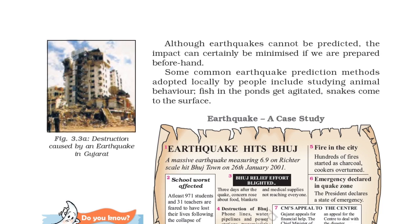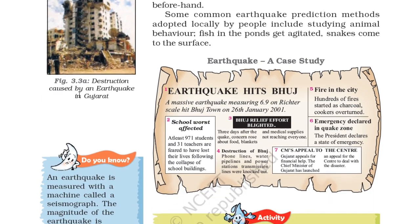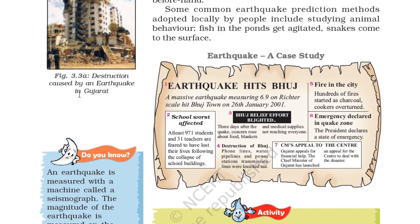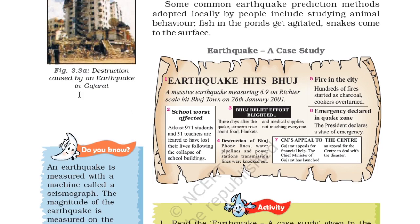Figure 3.3a shows lesser destruction caused by an earthquake in Gujarat. A massive earthquake measuring 6.9 on the Richter scale hit Bhuj town on 26 January 2001. At least 971 students and 31 teachers are feared to have lost their lives following the collapse of a school building. Three days after the earthquake, concern rose about food, blankets, and medical supplies not reaching everyone. Telephone lines, water pipelines, and power station transmission lines were knocked out.